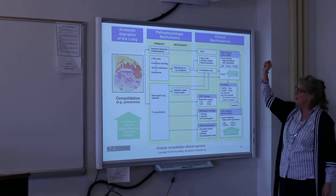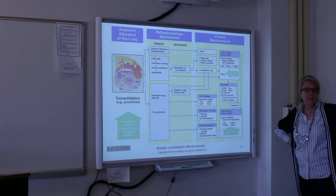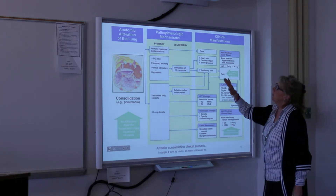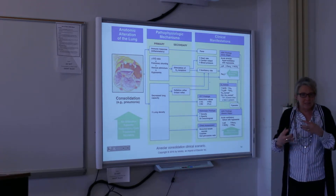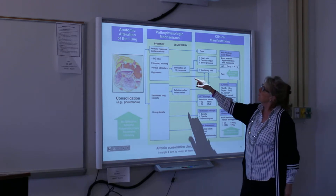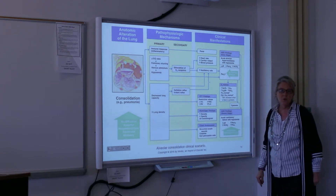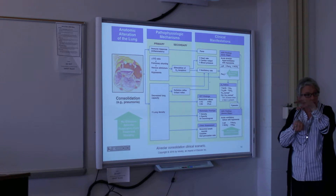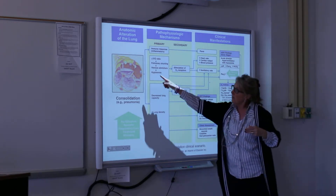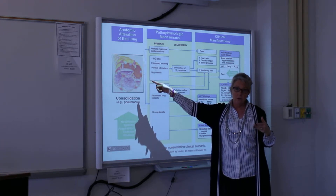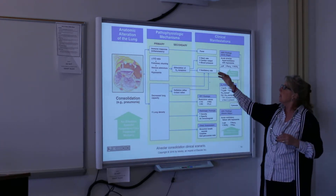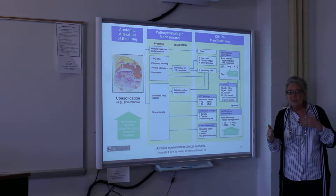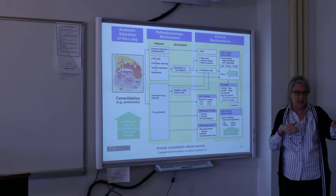The primary pathophysiologic mechanism is the initiation of the immune and inflammatory response — white blood cells are coming to the site. The ventilation-perfusion ratio is going down, so there is more perfusion than ventilation. That's because air can't get into the alveoli.